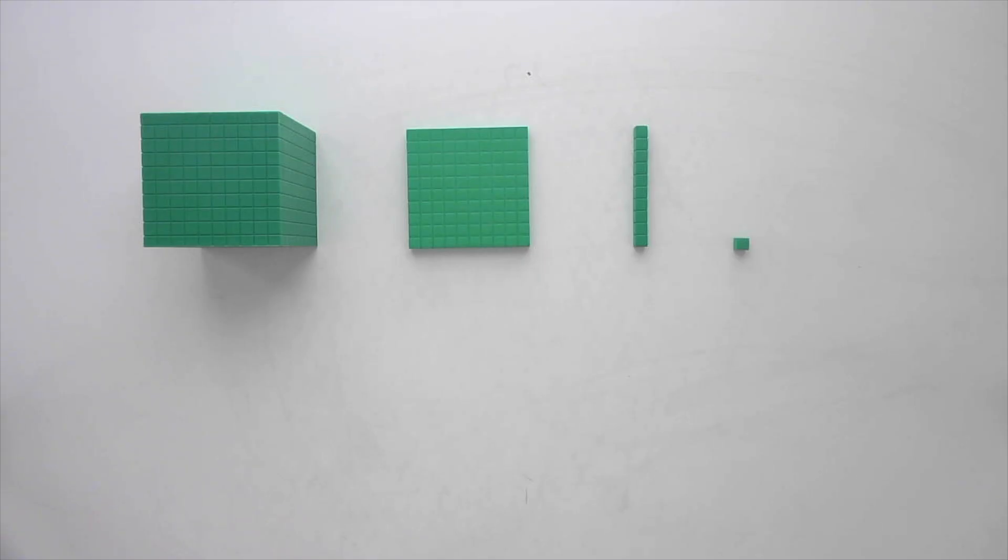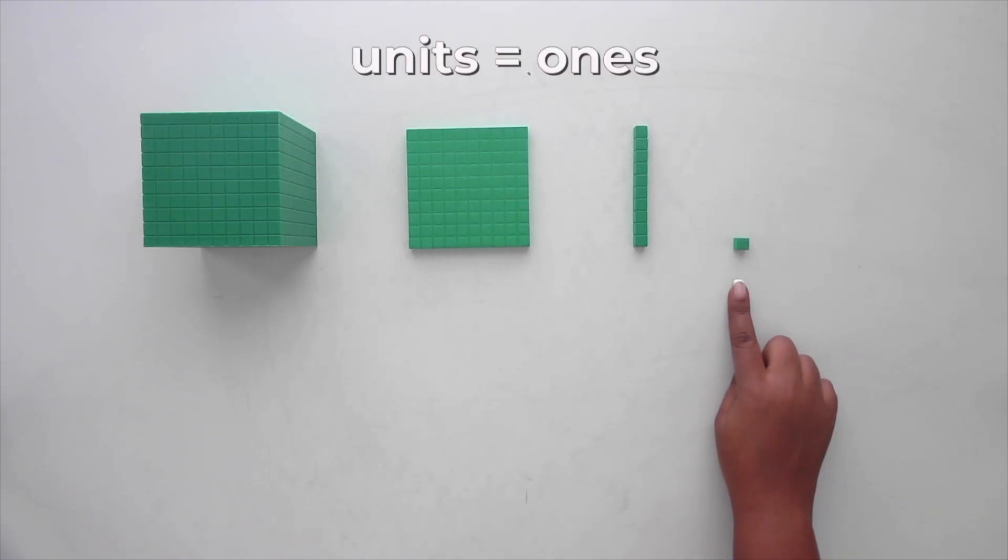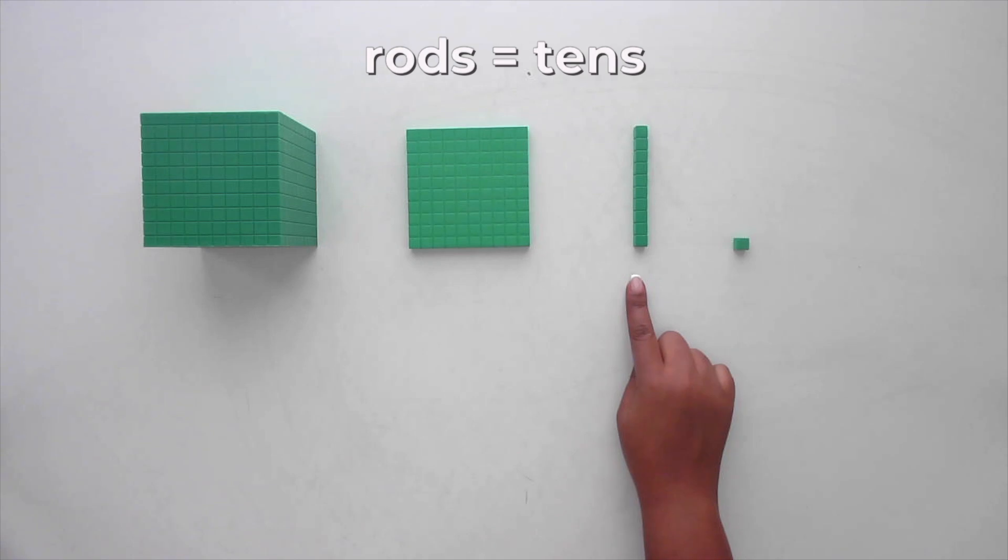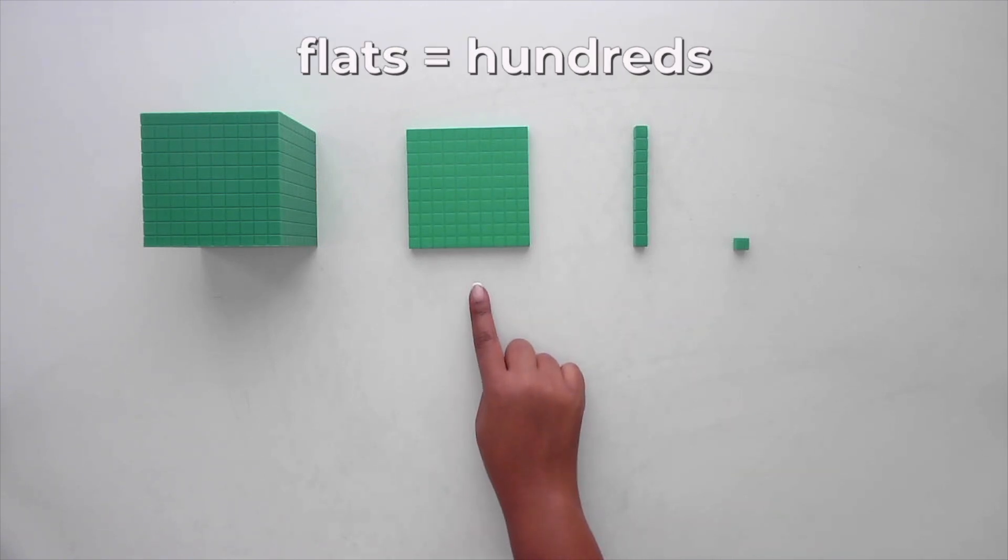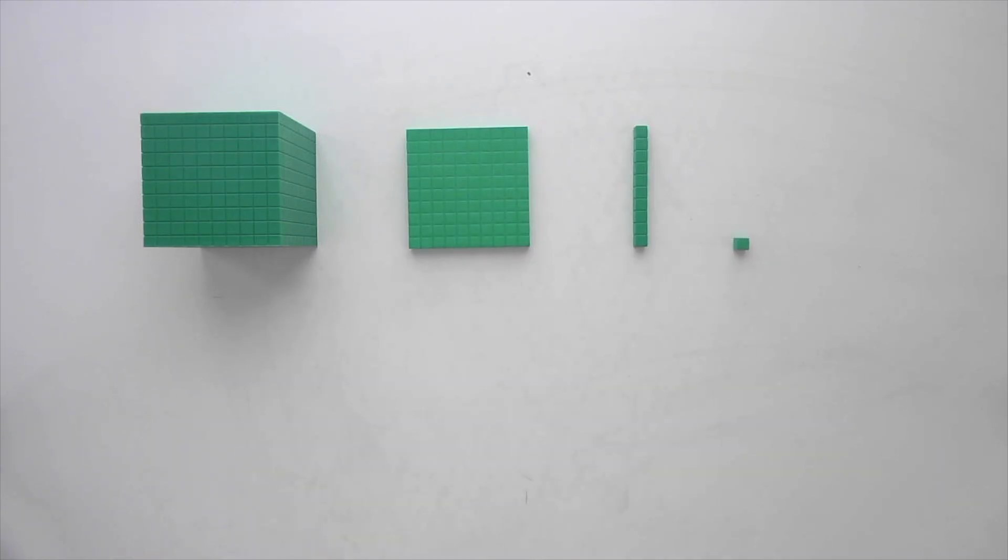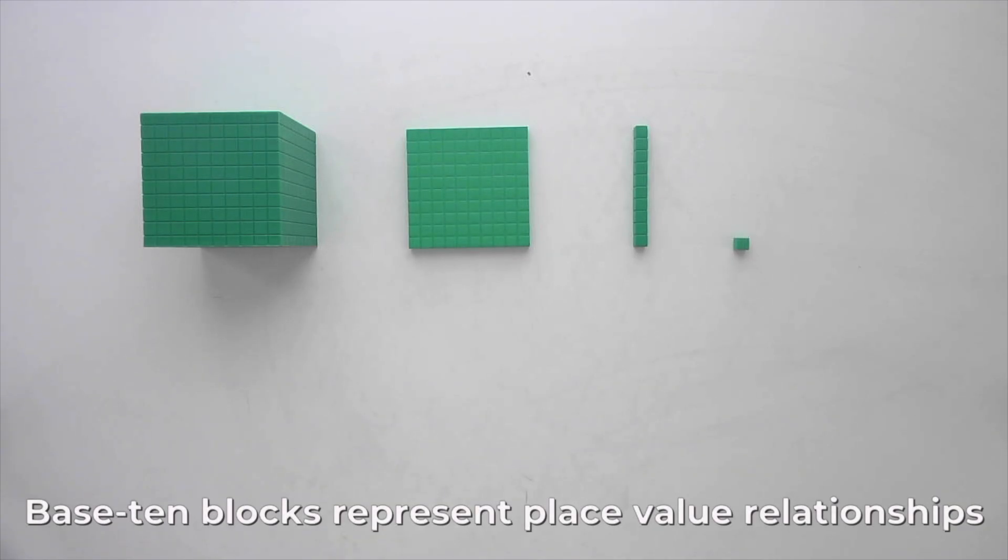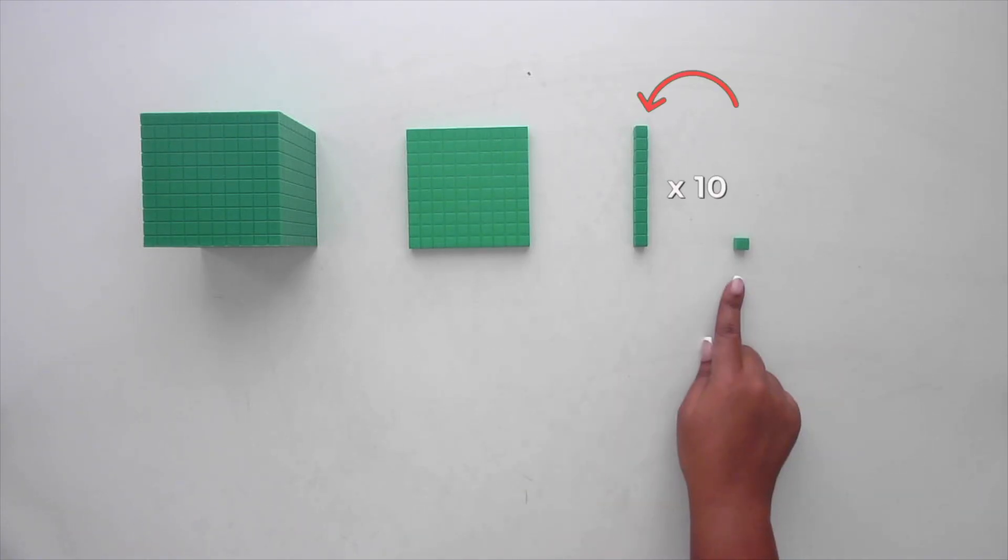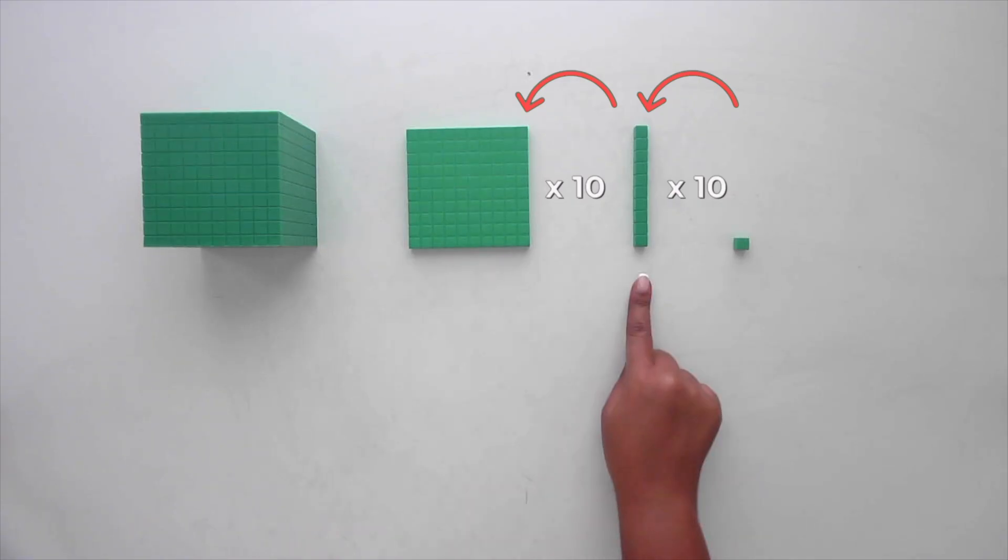Base 10 blocks flexibly represent whole numbers. Typically, unit cubes represent ones, rods represent tens, flats represent hundreds, and large cubes represent thousands. As I mentioned before in this series, because base 10 blocks represent place-value relationships in the base 10 system, each block is 10 times the value of the block to its right.